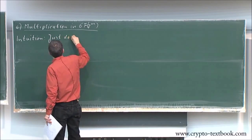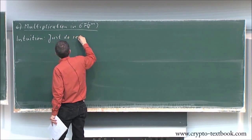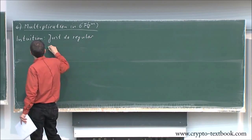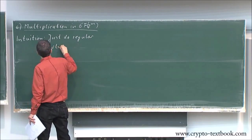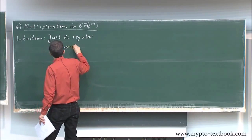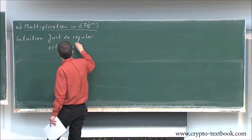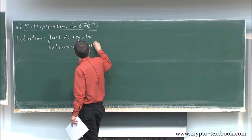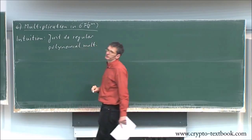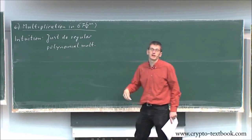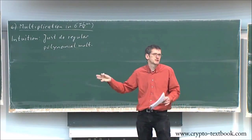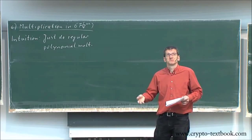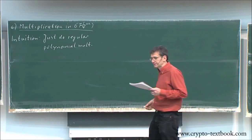Just do regular polynomial multiplication. It essentially worked — addition and subtraction wasn't that bad. You just multiply, and hopefully we're there.